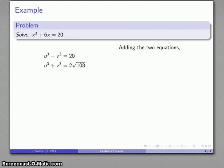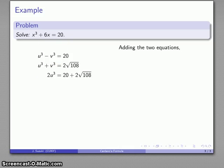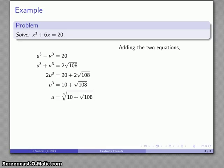Now if I add these two equations, the v³ terms drop out, and I'm just left with the u³. So that gives me 2u³ = 20 + 2√108, and solving for u³, and then solving for u is just going to be the cube root of 10 + √108. So I have that first term.